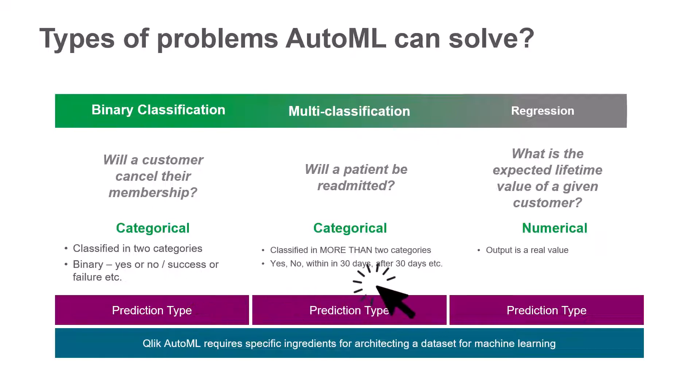Multi-classification problems require the target to be classified in more than two categories. For example, in order to answer a question like will a patient be readmitted? — possible answers can be no, within 30 days, after 30 days, etc.